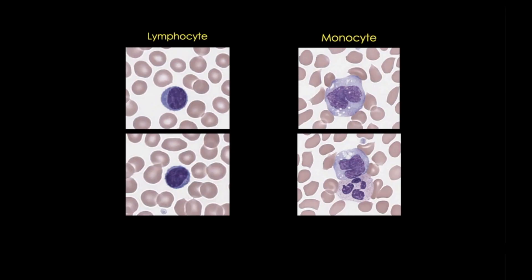Lymphocytes and monocytes are both agranulocytes. This means there aren't any specific cytoplasmic granules, color, or nuclear lobation that can really help facilitate the distinction of cells. However, the shape of the nucleus and the nuclear-to-cytoplasmic ratio, as well as specific features in the cytoplasm, can all be clues to differentiate between these two white blood cells.